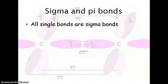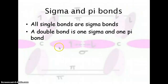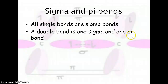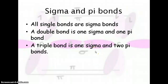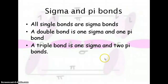A little more on sigma and pi bonds: all single bonds are going to be sigma bonds. A double bond gives you one sigma and one pi — one bond in the plane of the atoms coming right at each other, and one pi bond above and below the atom. A triple bond is going to be one sigma and two pi bonds, with two pi bonds above and below the atom.